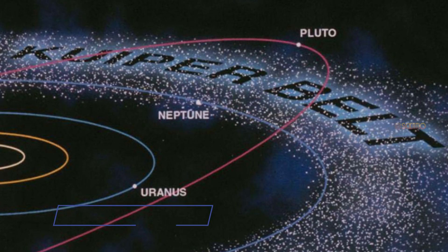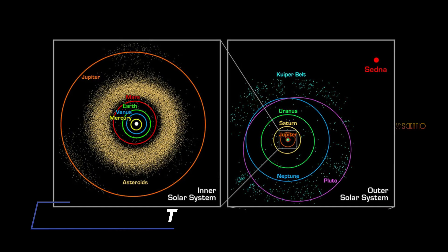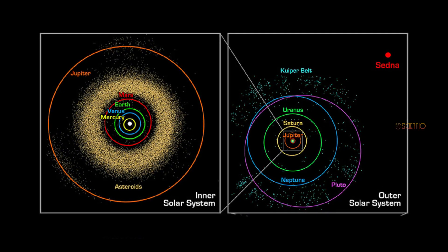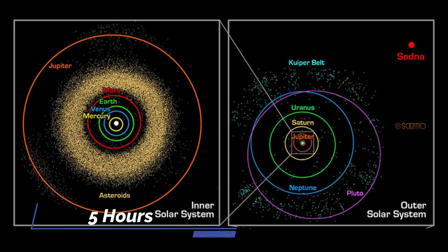Beyond Neptune lies the Kuiper belt, a vast region of icy objects left over from the formation of the solar system. At the speed of light, it would take us about 5 hours to cross the Kuiper belt.